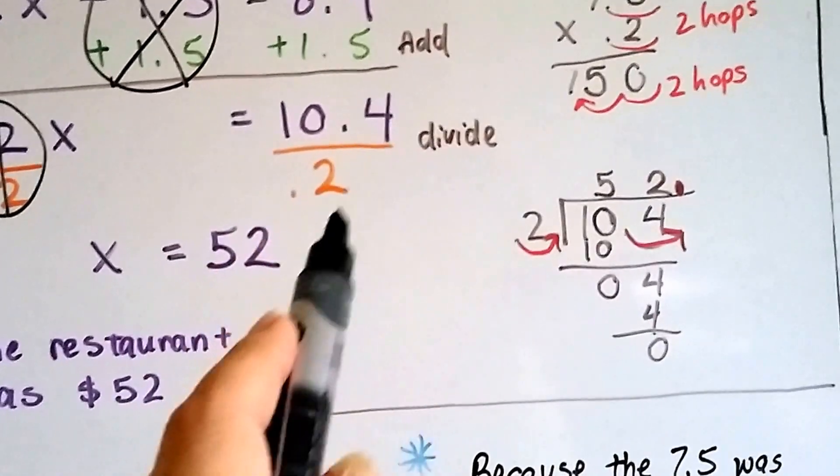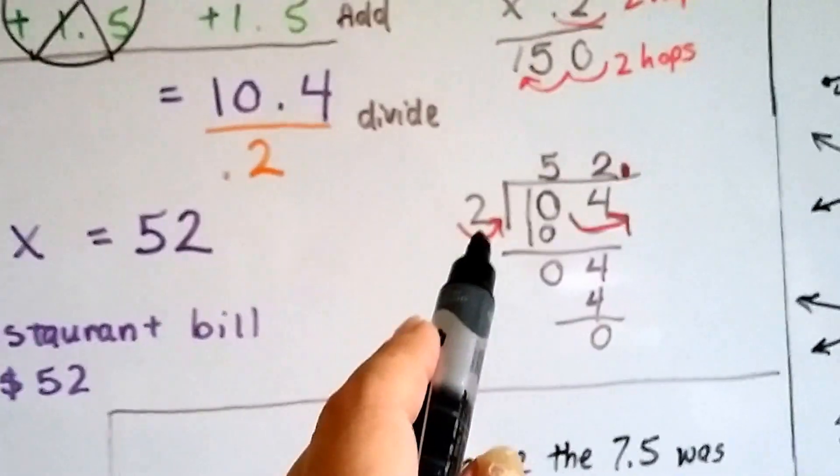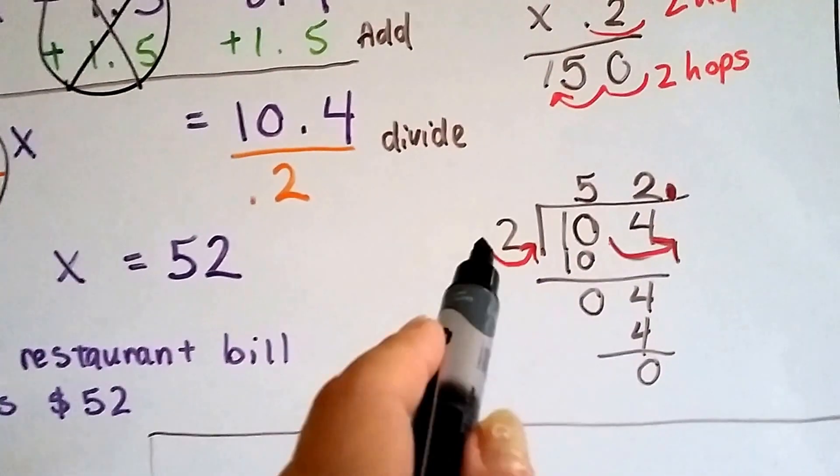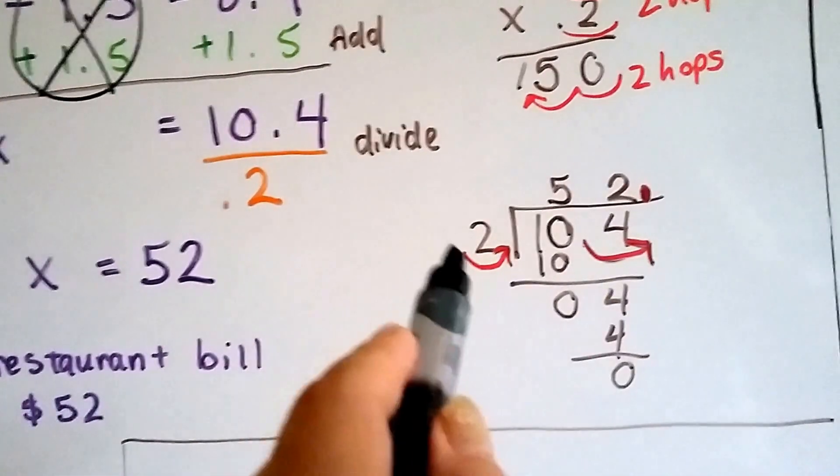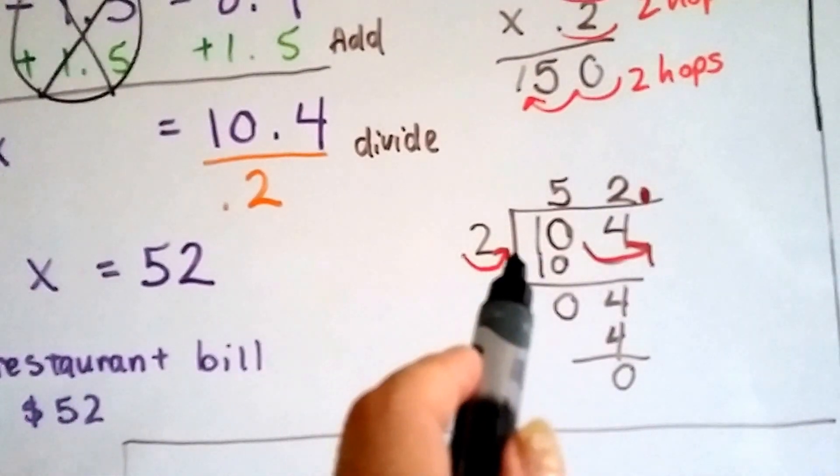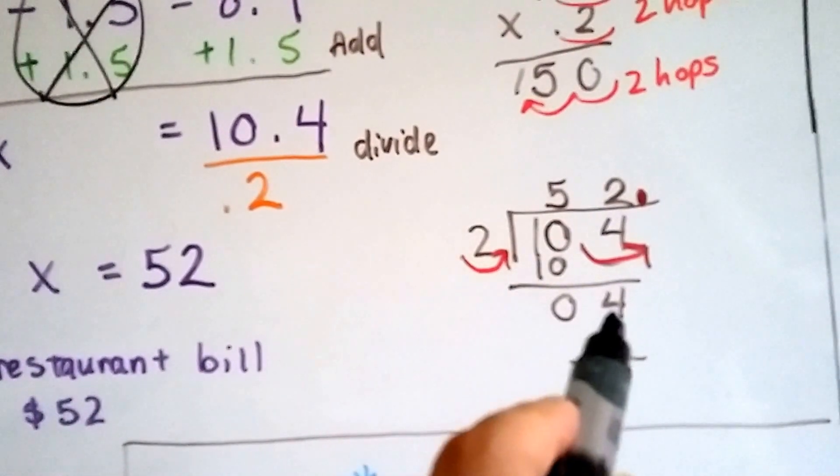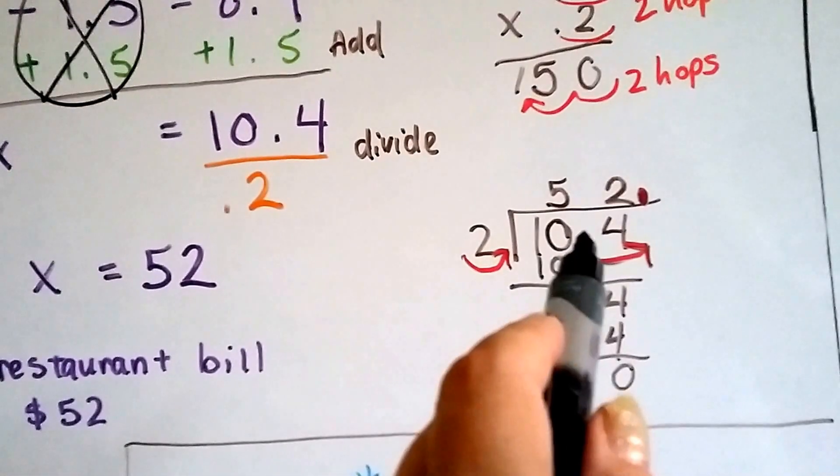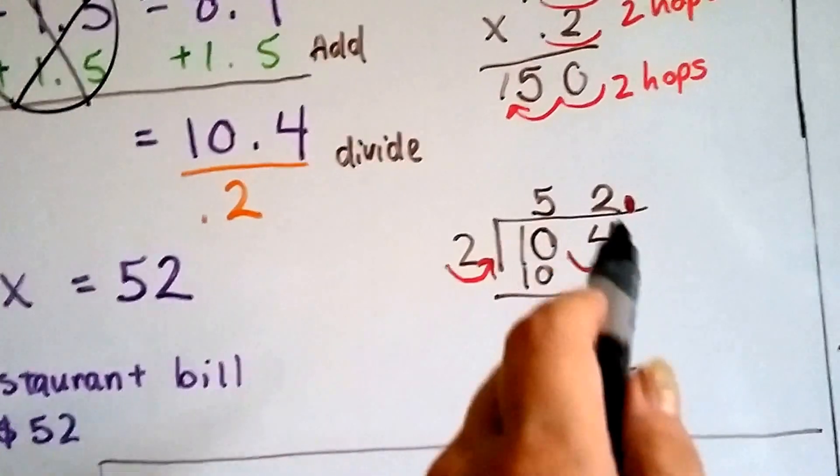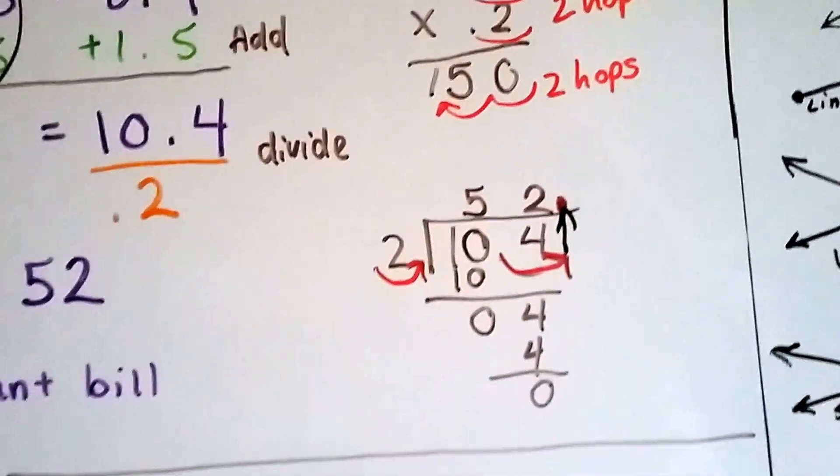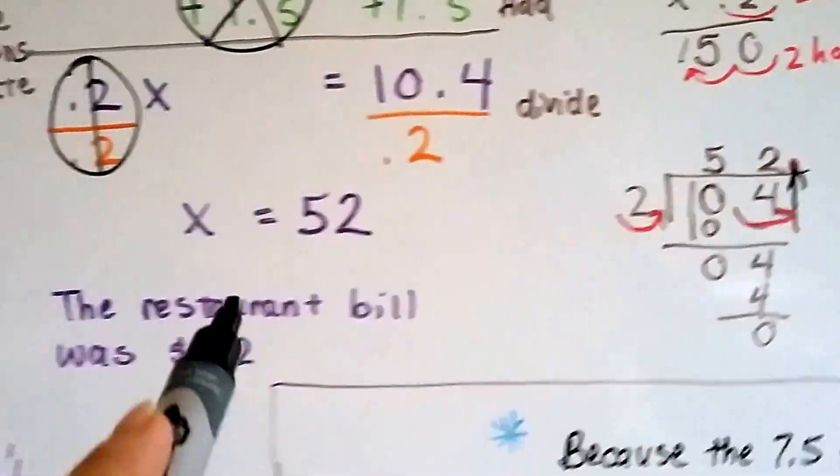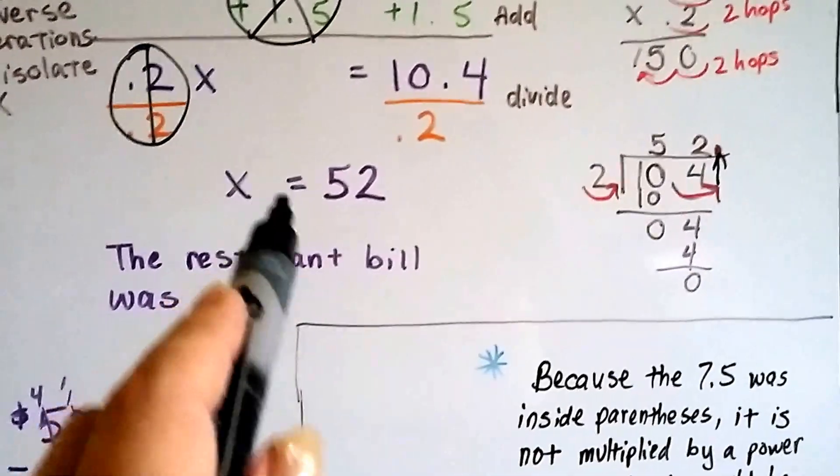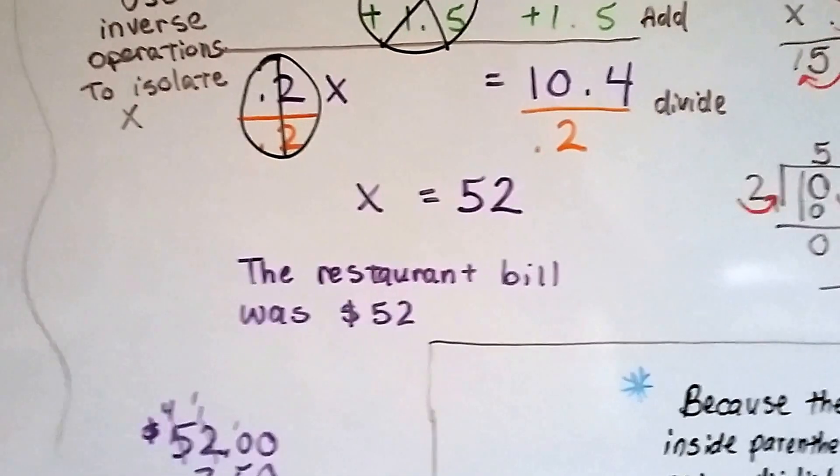And that's 10.4 divided by 0.2. When we do long division real quick, we can just move that decimal point behind the two and behind the four. If we move it one hop in the dividend, we need to move it in the divisor, we need to move it in the dividend. And that puts it straight up here in the answer. And two goes into 104, 52 times. So we get that X is equal to 52. So the restaurant bill was $52.